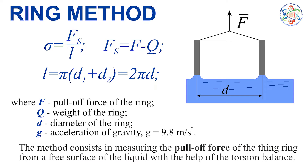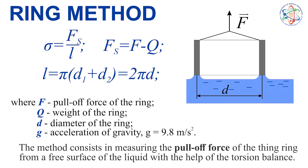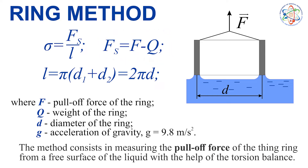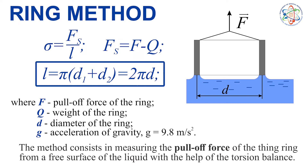The surface tension factor generally equals the force of the surface tension divided over the length of the ring. The force of the surface tension is identified as the difference between the externally exerted force and the weight of the ring. The length of the ring is measured as π times the sum of the internal and external diameter of the ring.